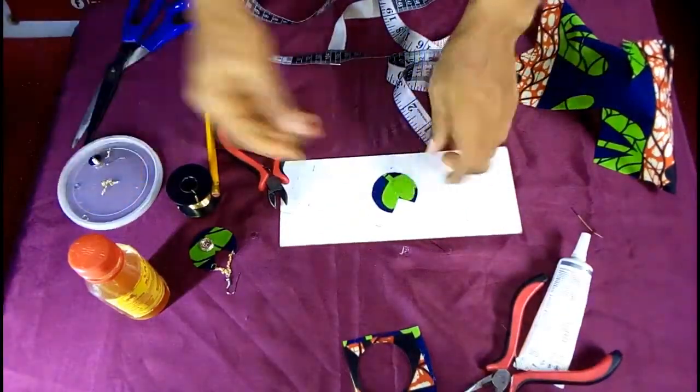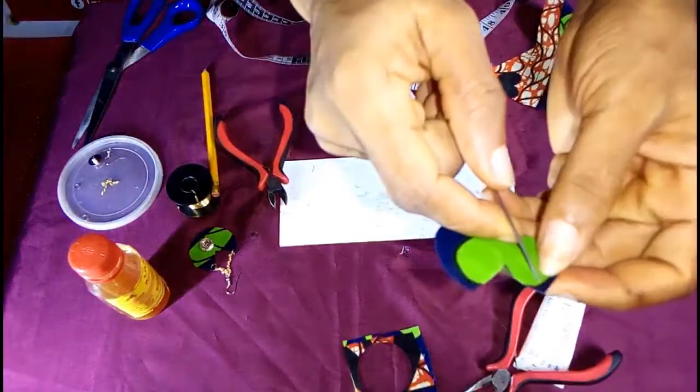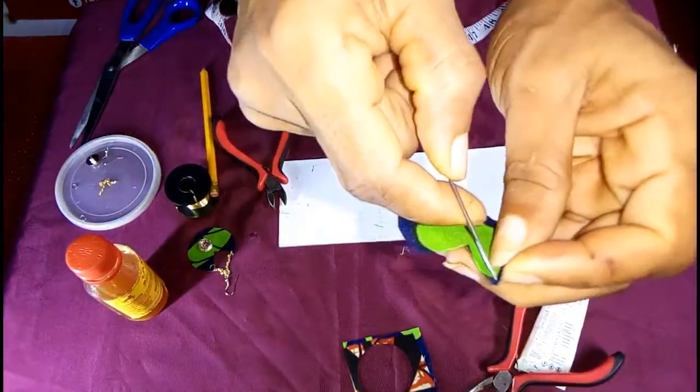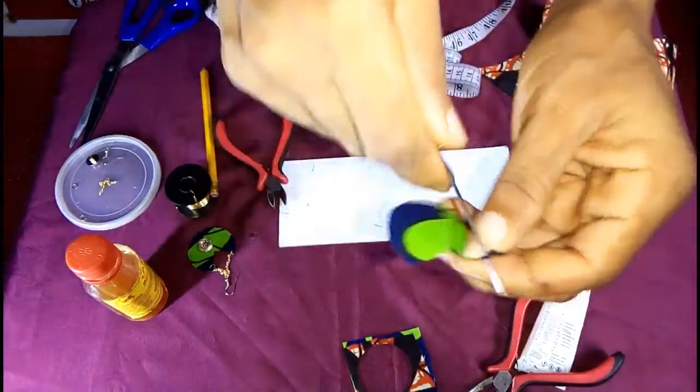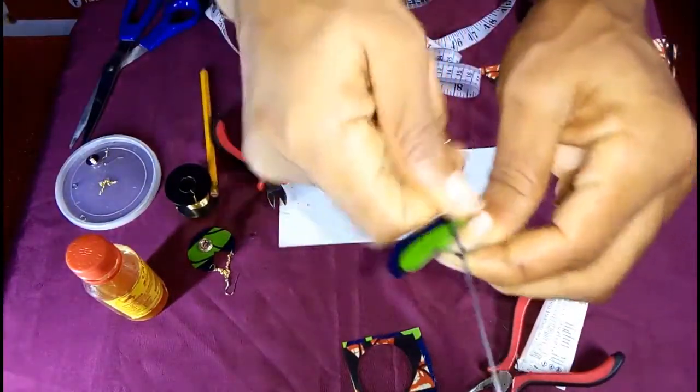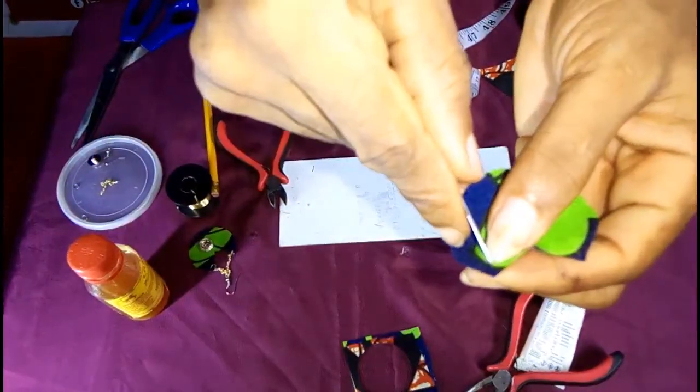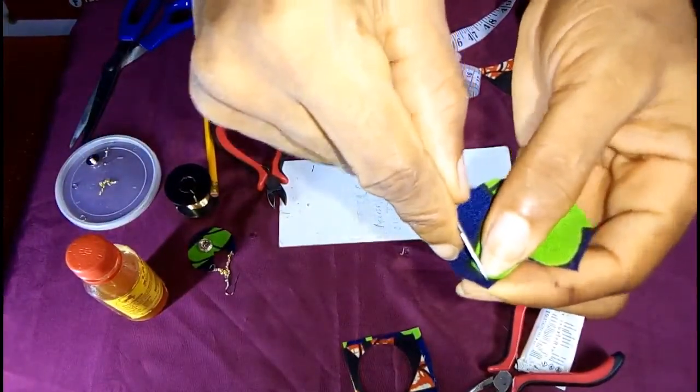Once we're done with this, pick your needle to make a loop here. Ensure the loop is visible, and make a loop on this side as well.